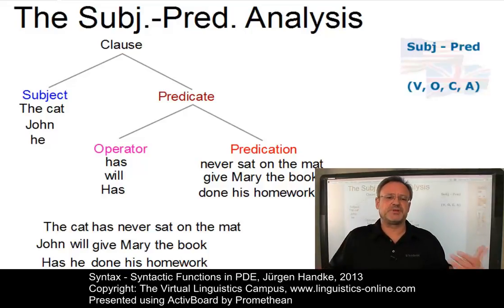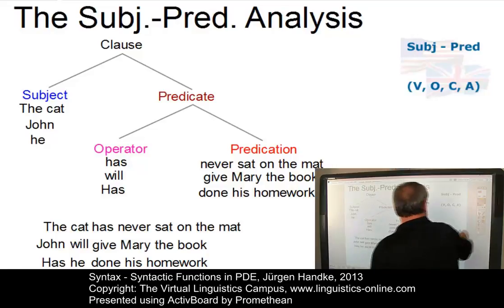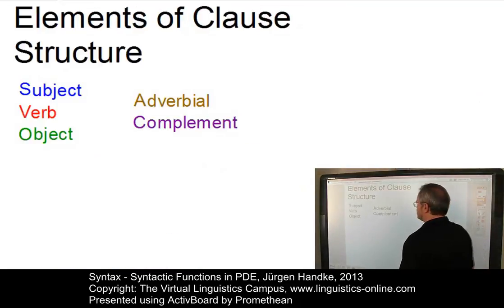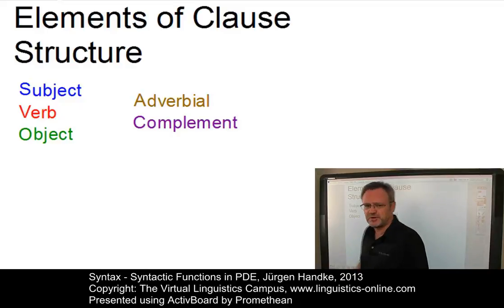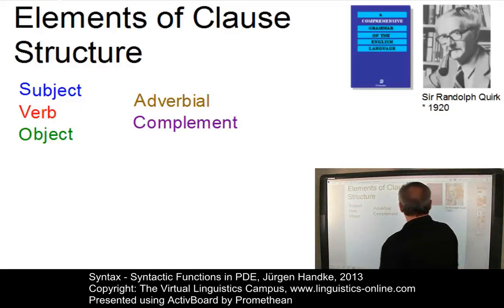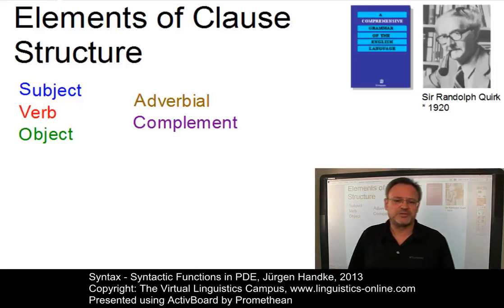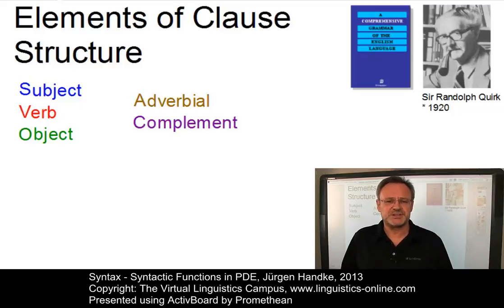Now, this analysis is relatively superficial. For this reason, a more detailed functional analysis distinguishes the following functional elements of clause structure: subject, verb, object, adverbial, and complement. This analysis is described in detail in the Comprehensive Grammar of the English Language published by Sir Randolph Quirk and his colleagues Sidney Greenbaum, Jan Svartvik, and Geoffrey Leech.